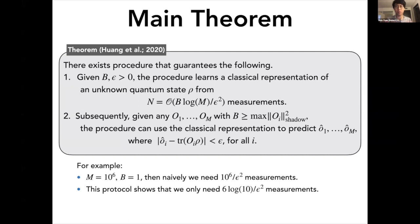So what is the surprising part of the theorem? Let's consider the following example. Let's say we wanted to predict 10 to the 6 different observables, the expectation value of 10 to the 6 different observables, all of them have a norm bounded by 1. Naively, since we have M like 10 to the 6 observables, if you wanted to get their expectation value, we have to measure each of M and that would require 10 to the 6 over epsilon squared measurements. However, this theorem essentially tells us that from this N equal to B log M over epsilon squared, we actually only need 6 log 10 over epsilon squared measurements, which is a significant reduction from 10 to the 6.